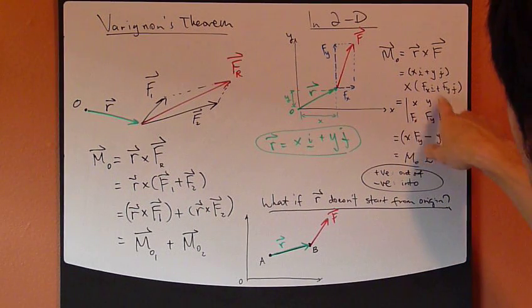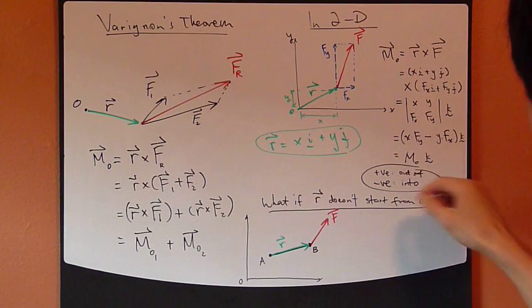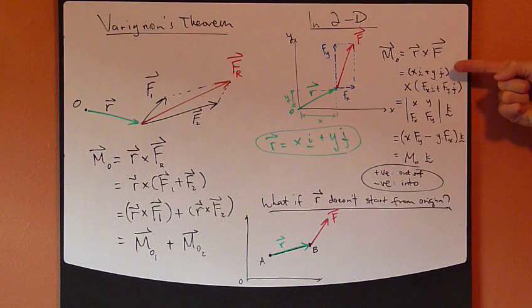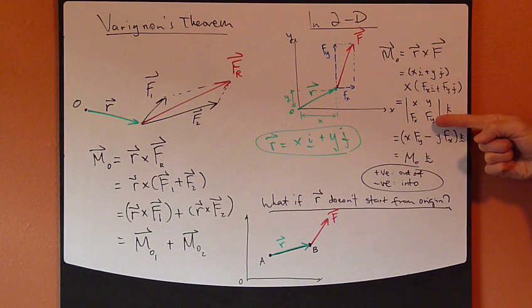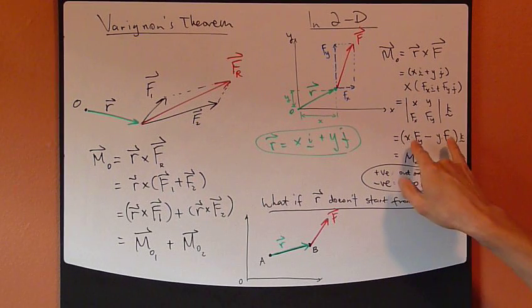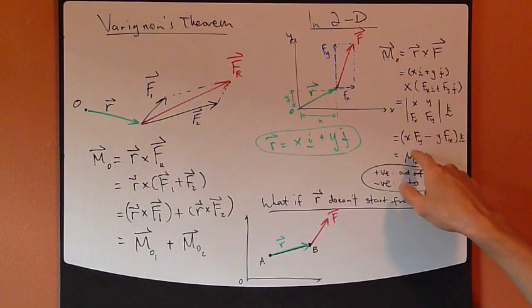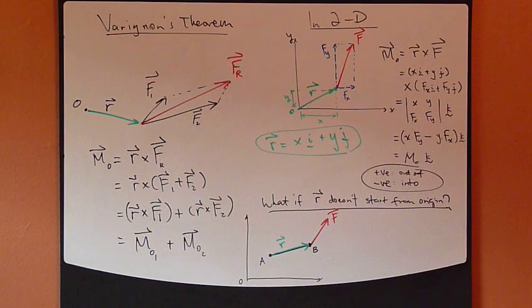And so it becomes a two-by-two determinant. First row is the R component. Second row is the F component. Carry out the cross product. That's it. So only have two terms in here. This minus that. And the result is in K direction.